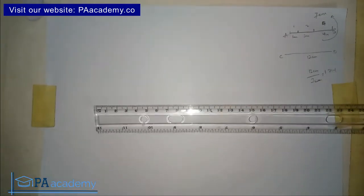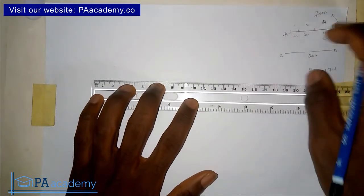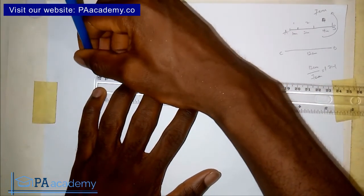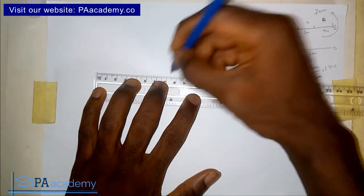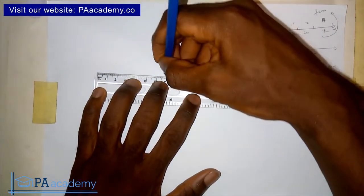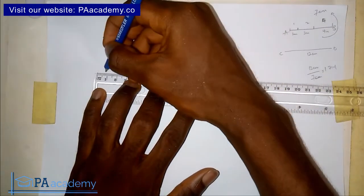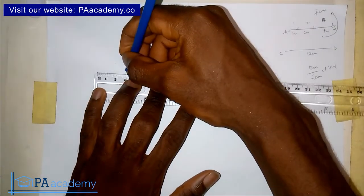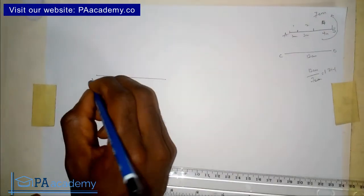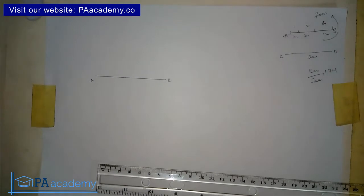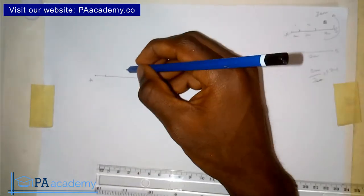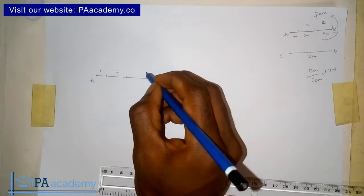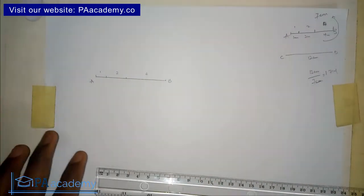We are going to work through this as an example. I'll draw a line of seven centimeters — from this point to this point is seven centimeters. I'll divide the line: from here to one centimeter, then another two centimeters to here, and then the remaining four centimeters. Let's call this line AB. So we have the divisions of one, two, and four — we've divided it in this ratio.